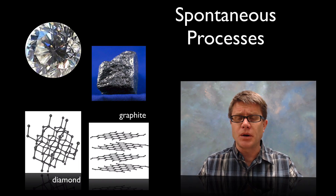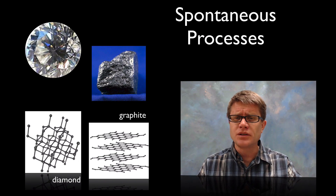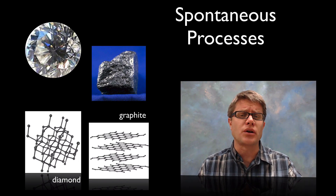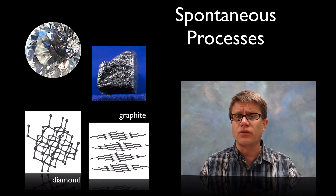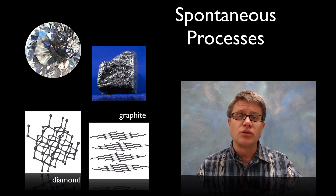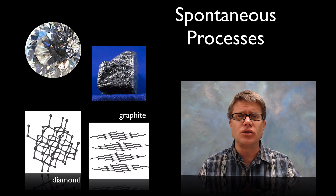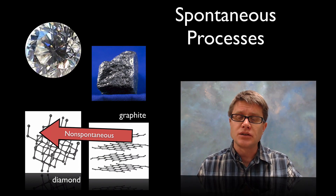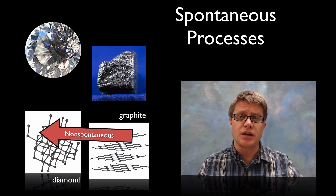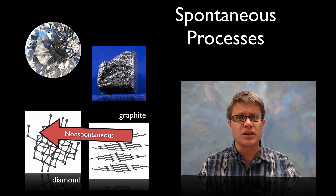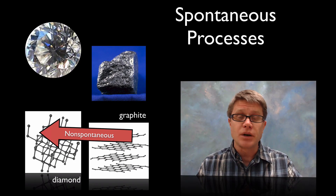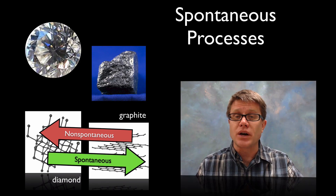Now the thing that's tricky about a spontaneous reaction is that it just doesn't occur magically — sometimes it can occur over millions of years. You probably know that graphite can be turned into a diamond, but it takes a huge amount of energy and pressure, so that's going to be a non-spontaneous process. It doesn't occur on its own without external energy. But if that's in one direction, in the opposite direction we're going to have a spontaneous reaction.